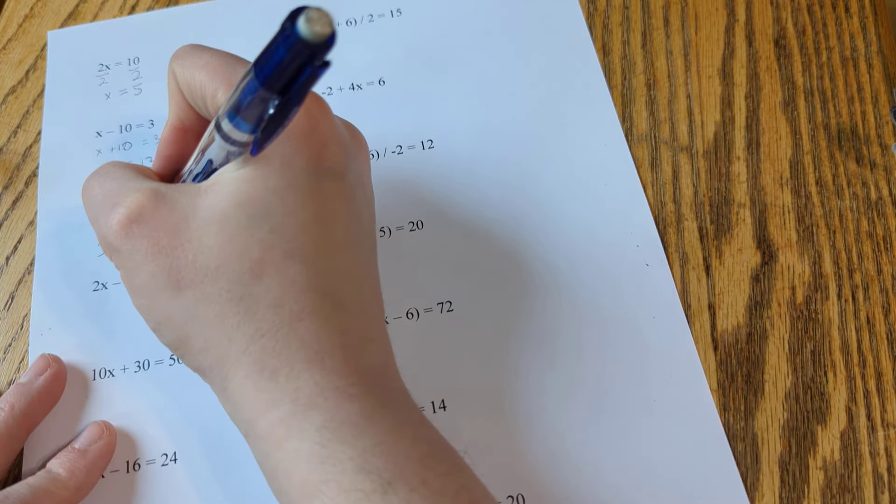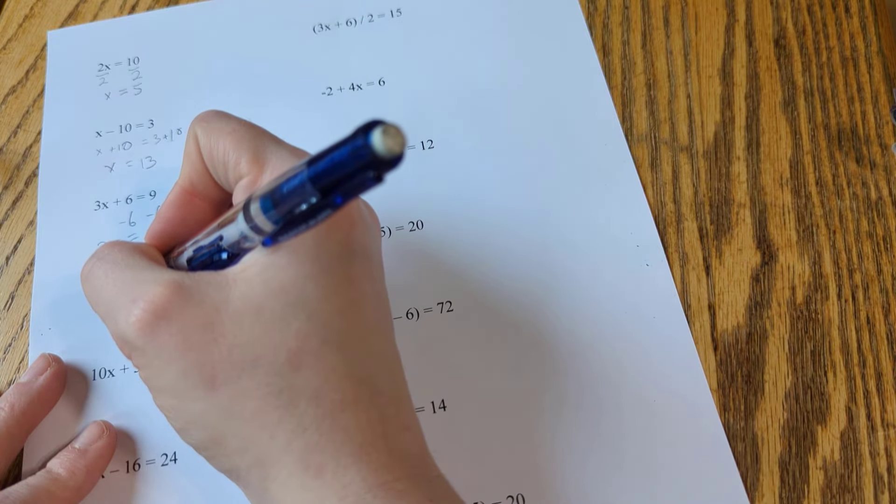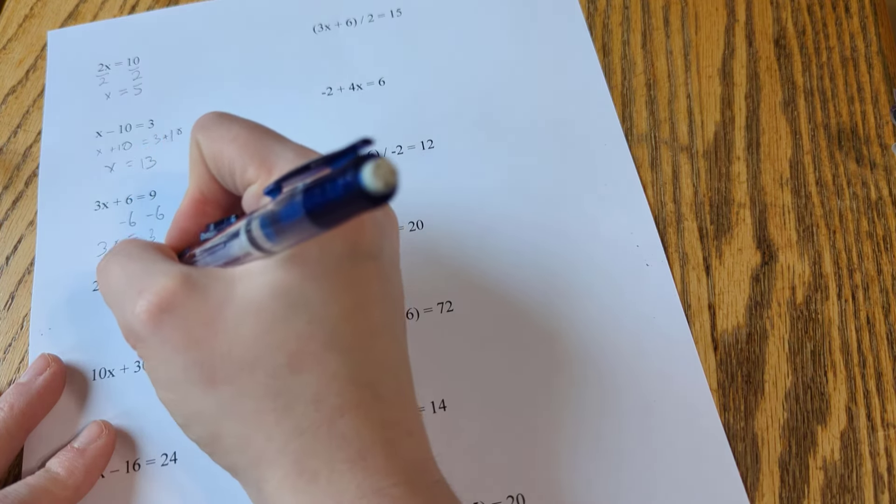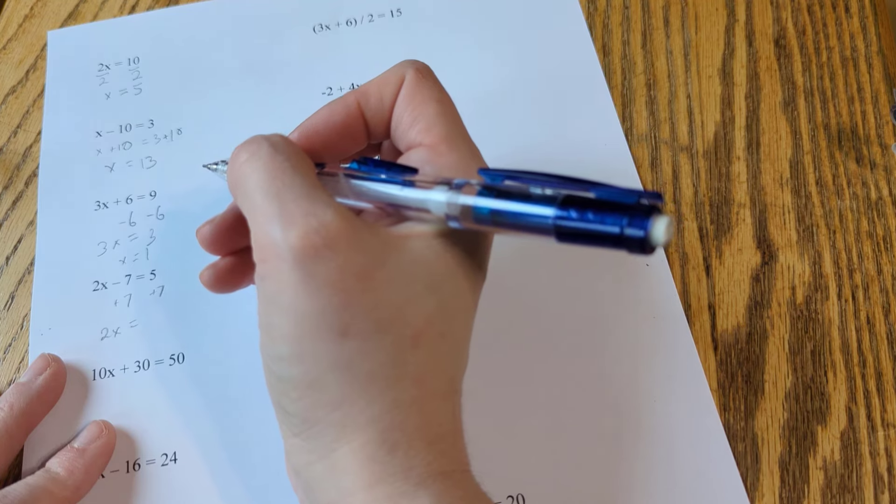Now, you're going to run into different things. They're going to be divisions and multiplications, additions, subtractions. We're mostly just dealing with those four. Eventually, you're going to be doing square roots and other things like that. But we're keeping it pretty simple to start.